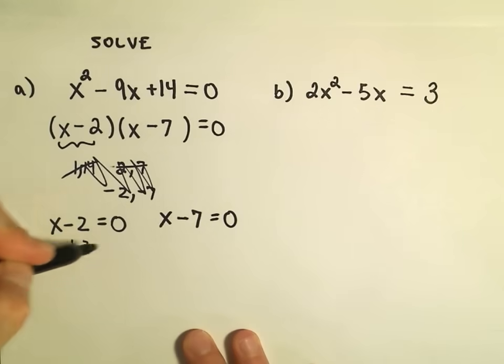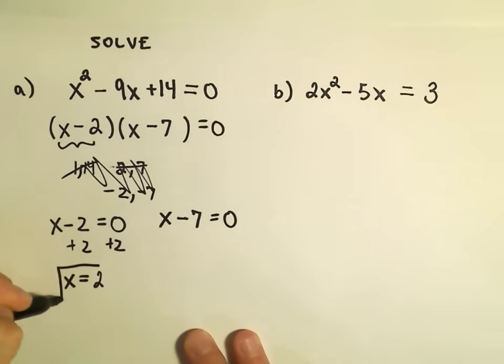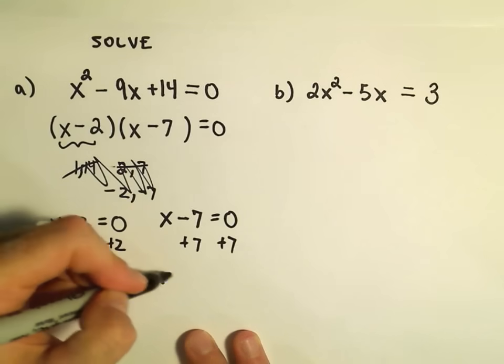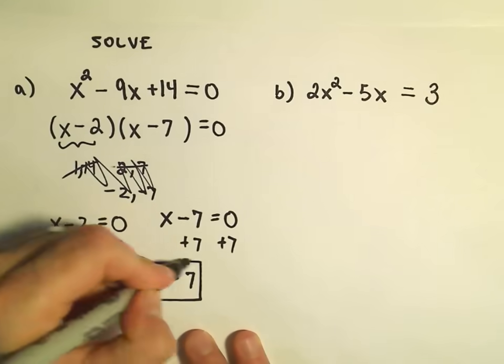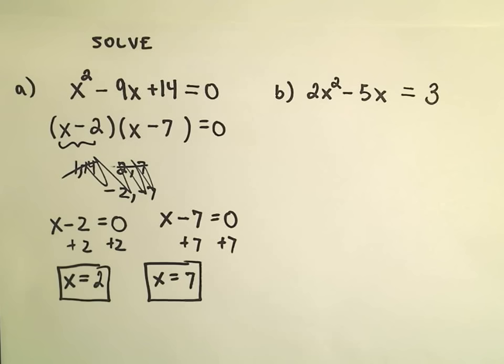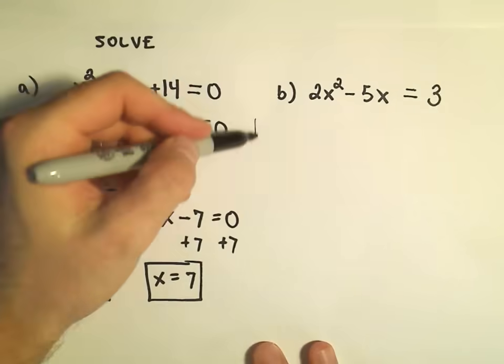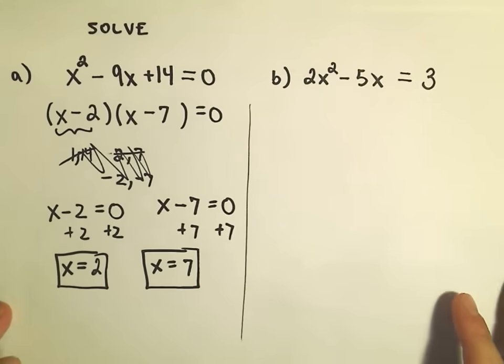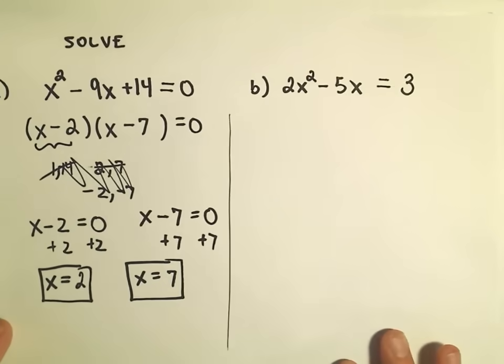In the first case, we can just add 2 to both sides, we'll get x equals positive 2. We can add 7 to both sides on the second one and get x equals 7. And now we have our two solutions to this quadratic equation. A quadratic equation can have exactly two solutions, or it can have exactly one solution, or it can have no solutions at all. I think both of my examples have two solutions.